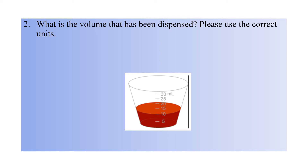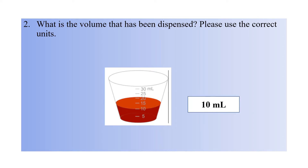Question number two: what is the volume that has been displaced? Please use the correct unit. This question is also a bit confusing — if you see the curve, it is a round curve and you might think the volume is more than 20. But if you look carefully, you can see the front part and the back part. Because it is round and you are seeing a picture rather than the actual syringe, you might get confused. The correct answer is 10 mL — write '10', then space, then small 'm' and capital 'L'.